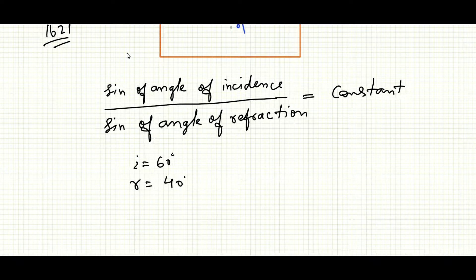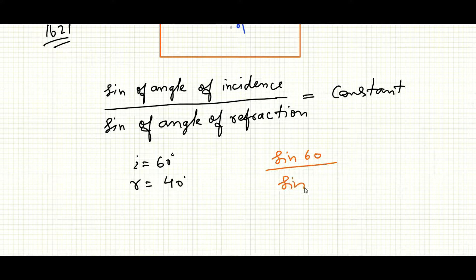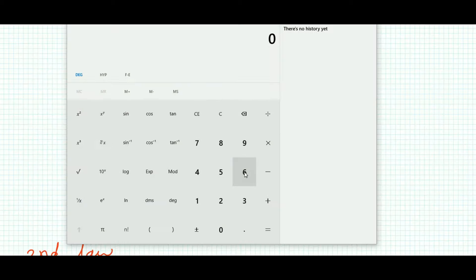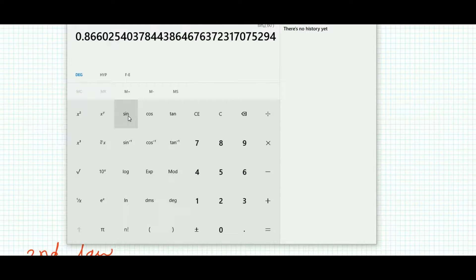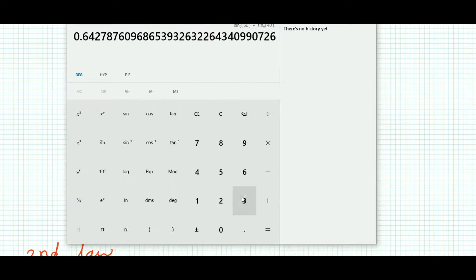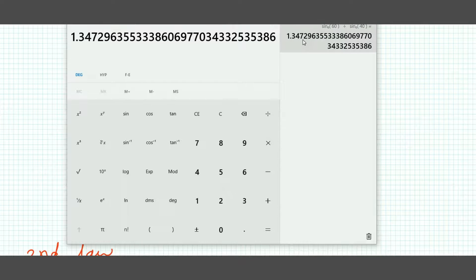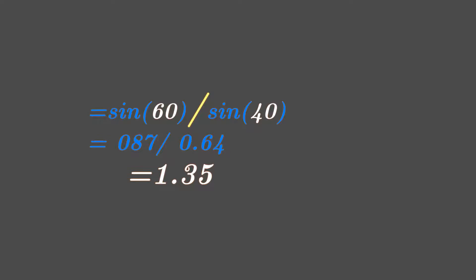So according to Snell's law, sine 60 by sine 40 will be, I am just finding it out here. It will be 1.347.